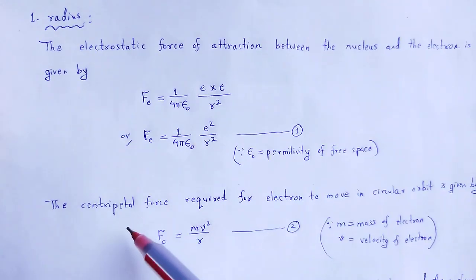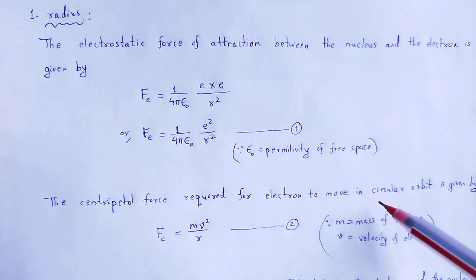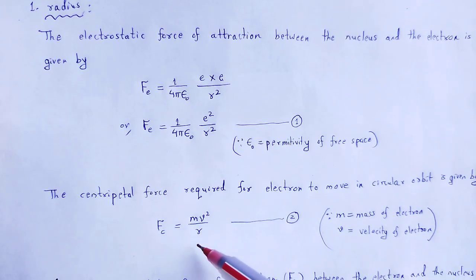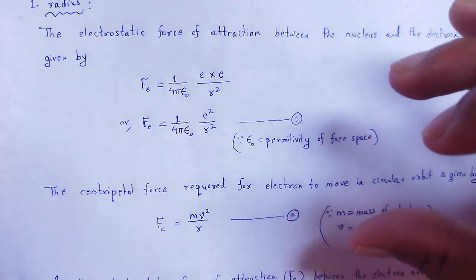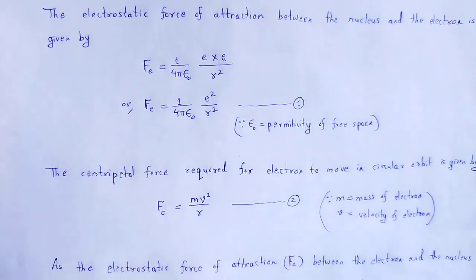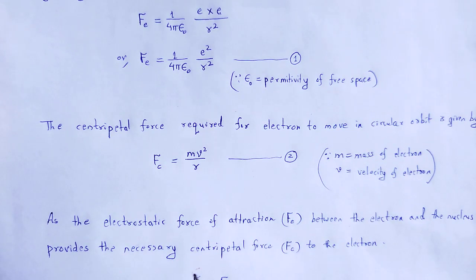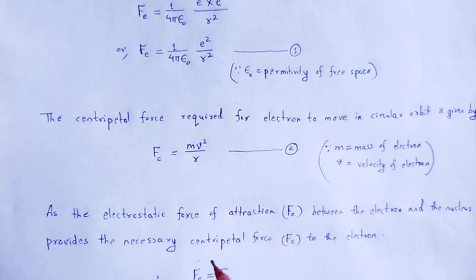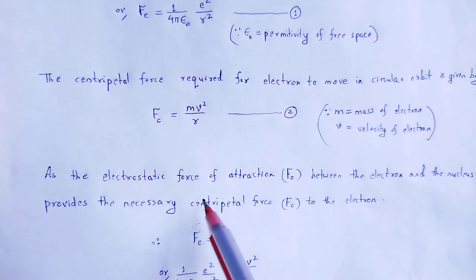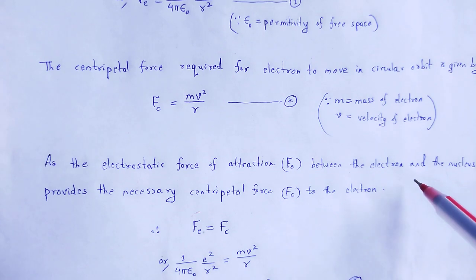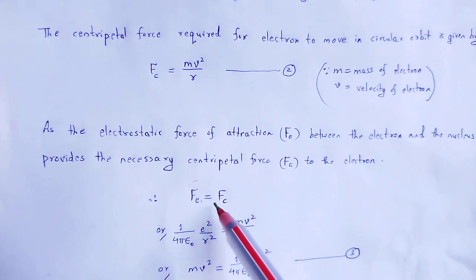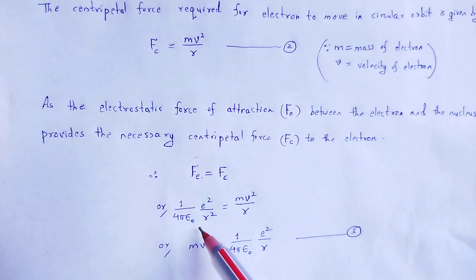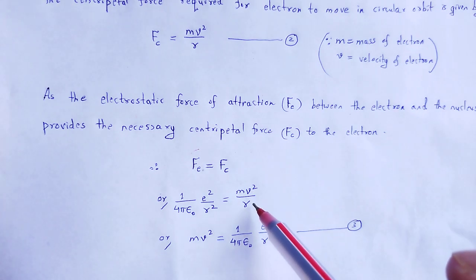Another force is the centripetal force required for the electron to move in a circular orbit, which is given by mv²/R, where m is the mass of the electron and v is the velocity of the electron. These two forces must be equal at the balancing situation. The electrons revolve around the nucleus in certain permitted orbits, as the electrostatic force F_E provides the necessary centripetal force F_C. That is why F_E = F_C: (1/4πε₀)(e²/R²) = mv²/R.